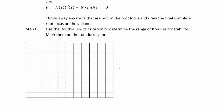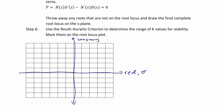Let's go down to the S-plane. We're going to mark the horizontal axis as our real axis, sigma, and the vertical axis as j-omega, our imaginary axis. Then we mark our three poles: a pole at 1, a pole at negative 2, and a pole at negative 3. Since real axis segments are to the left of an odd number of poles and zeros, our real axis segments are between 1 and negative 2, and to the left of negative 3.